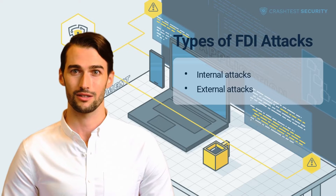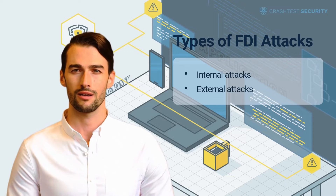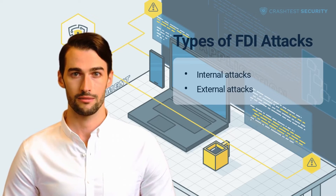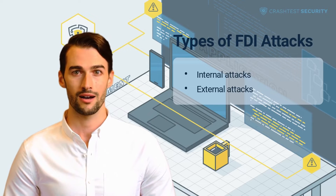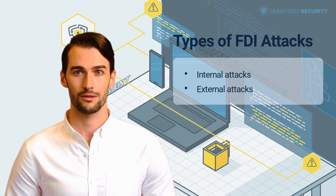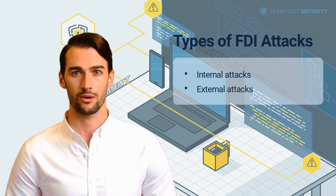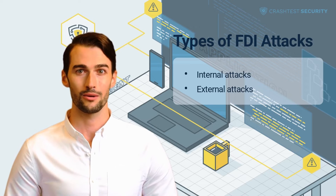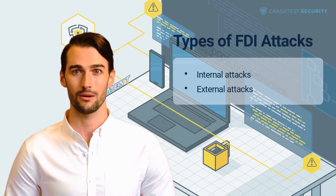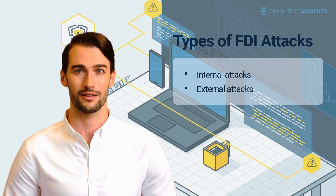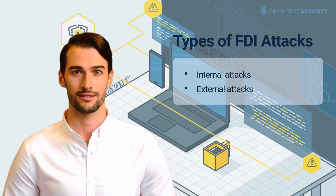False data injection attacks are categorized according to the subsystem affected and the level of access the attacker can obtain. The following section highlights the common forms of FDIA attacks and recently orchestrated real-world exploits as examples. Depending on the level of access adversaries possess to the power systems, FDIA attacks can be classified into internal attacks.